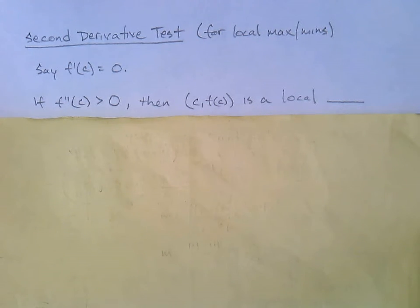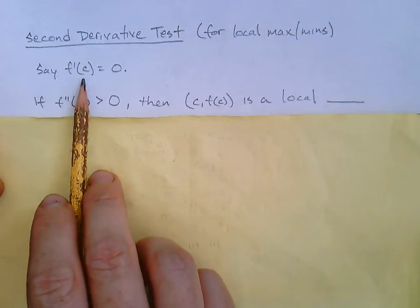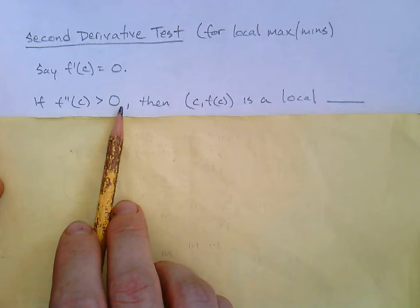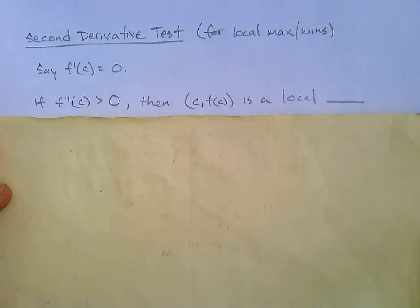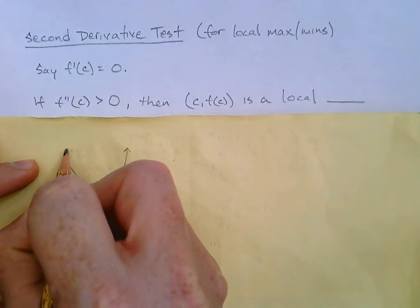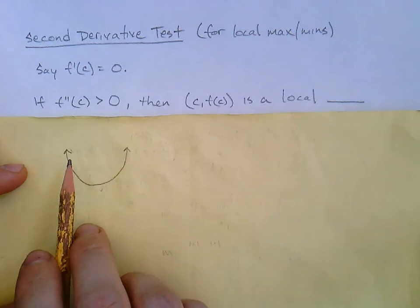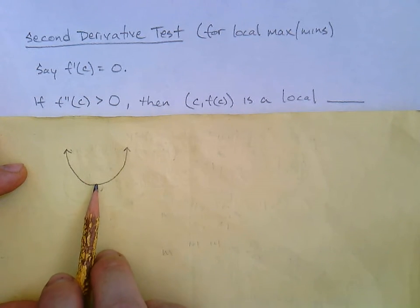If the second derivative at c is positive, then the point (c, f(c)) is a local what? And now it's tempting to say, positive, I know the answer. But wait a second. Here's what's going on. Let's put these two together. The first derivative is zero. The second derivative is positive. So second derivative is positive means concave up. Concave up. Does concave up have a local max or a local min? It actually has a local min.